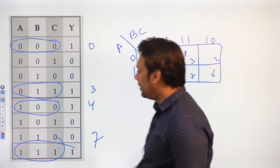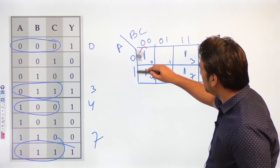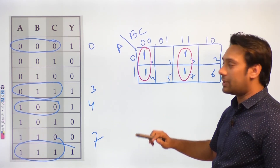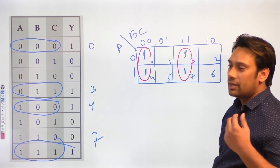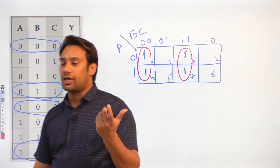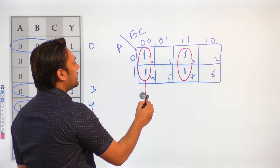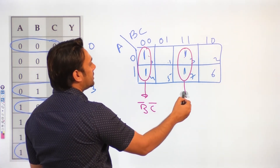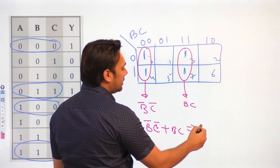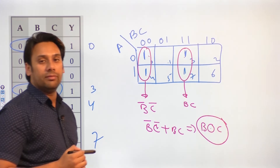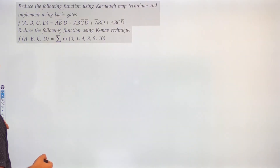Now I can make subcubes. I can make this as a subcube and this as another subcube. We cannot combine them because between these two locations there is a change of two bits — and since there is a change of two bits, we cannot combine them. So I can have only two subcubes here, and both are essential prime implicants. This is representing B complement C complement, and this is representing BC. Therefore, the solution is B complement C complement + BC, or you can say B XNOR C. Solving it is so easy and simple.